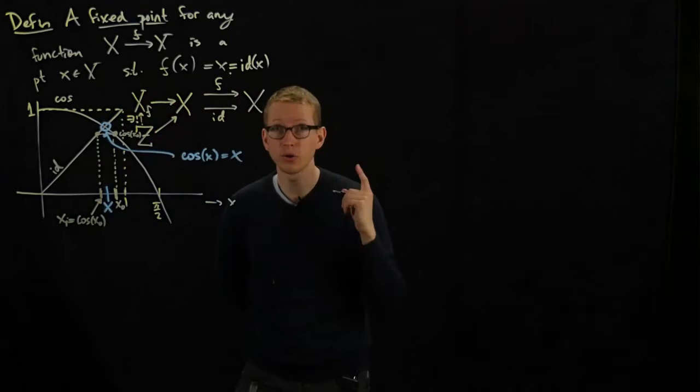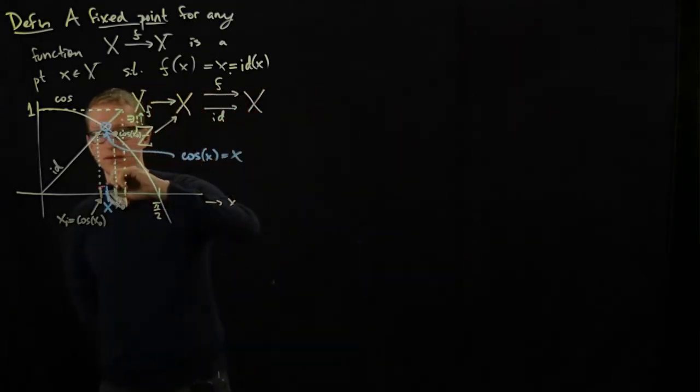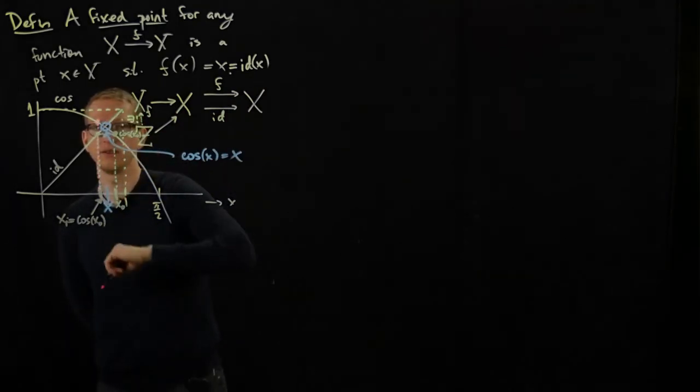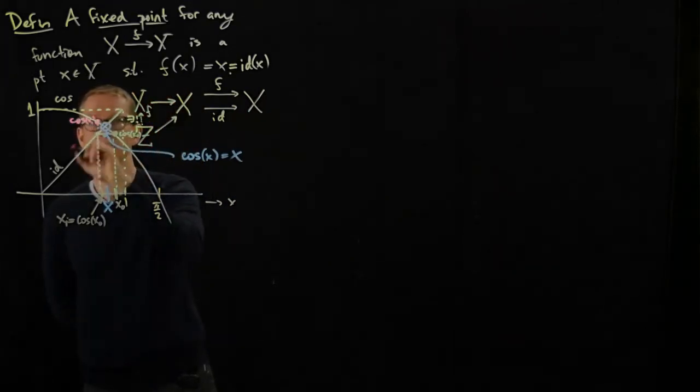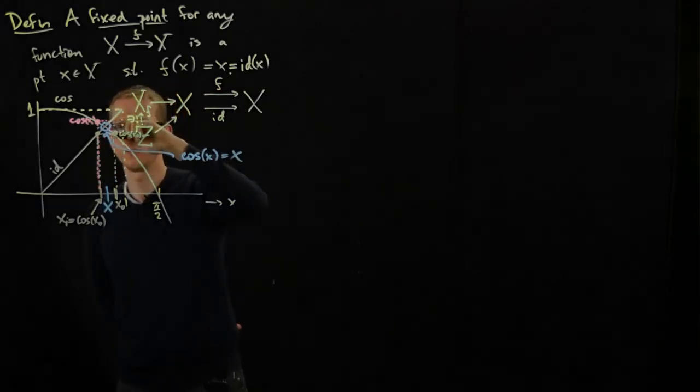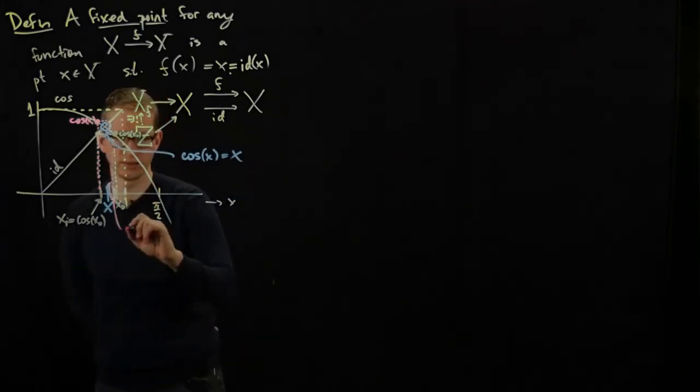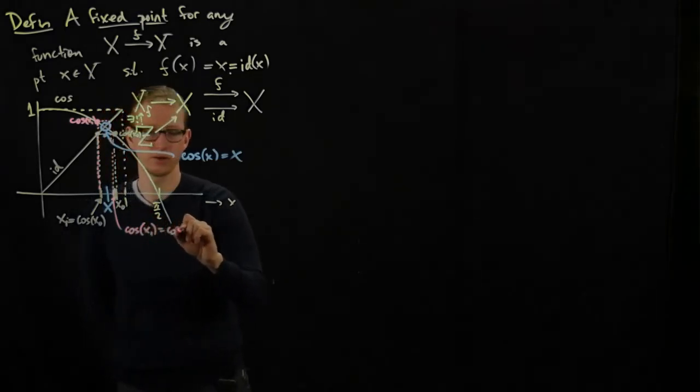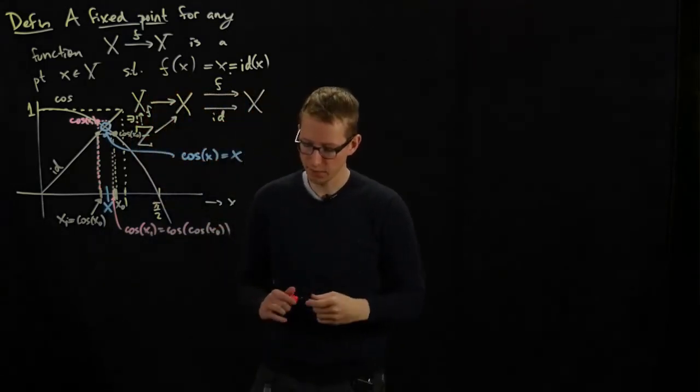And now apply cosine again. So let me draw that in another color. If you apply cosine again, you'll land again on this graph. This is cosine of x1. And then drop down again. Go to the identity, drop down, and you're going to land back on the horizontal axis. So this is cosine of x1, which is cosine of cosine of x naught. And keep doing this, over and over and over again.